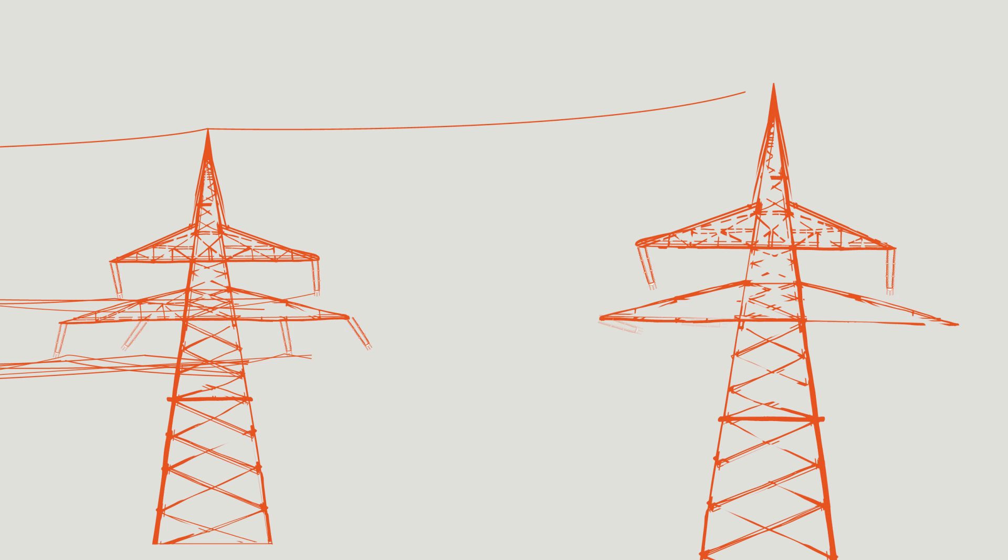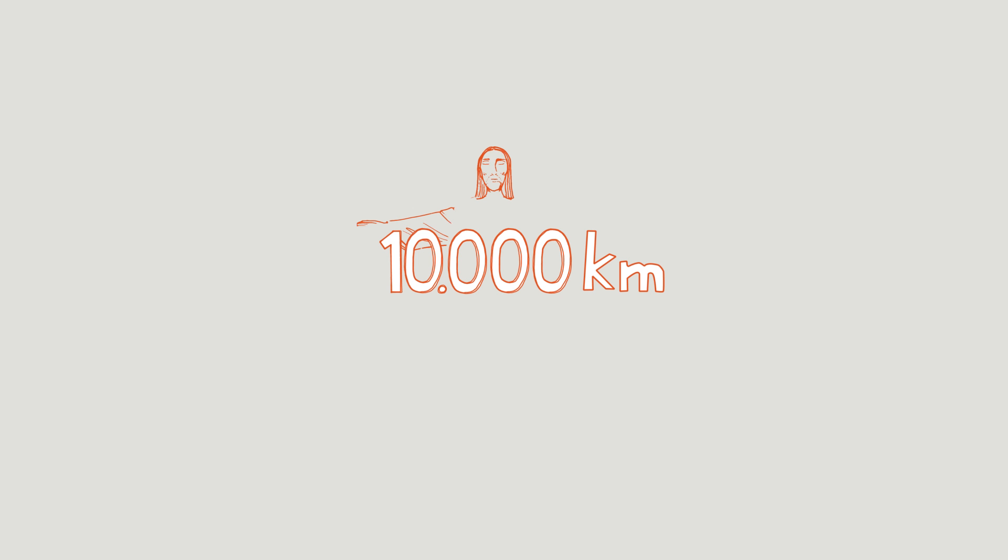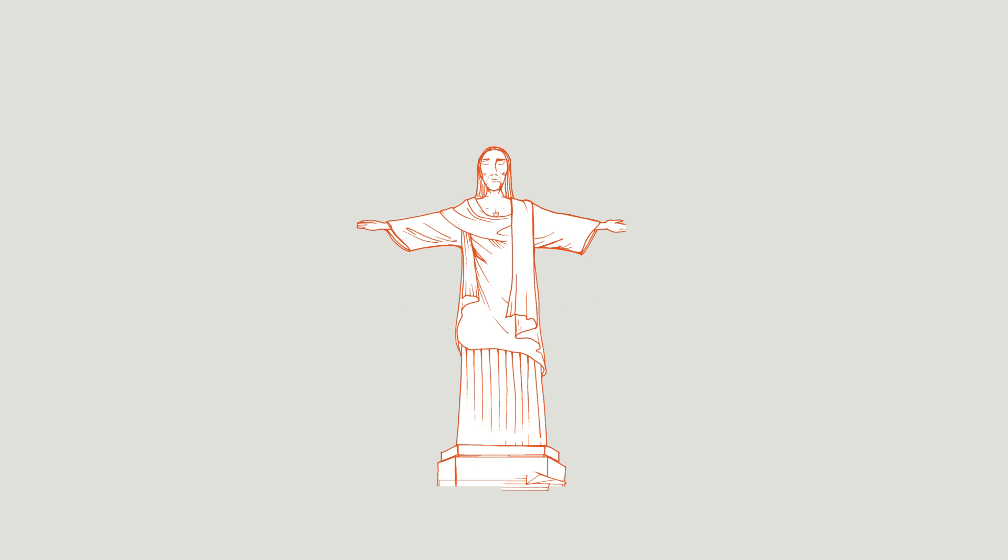How do transmission lines work? 10,000 kilometers - this is, for example, the distance between Rio de Janeiro and Berlin.